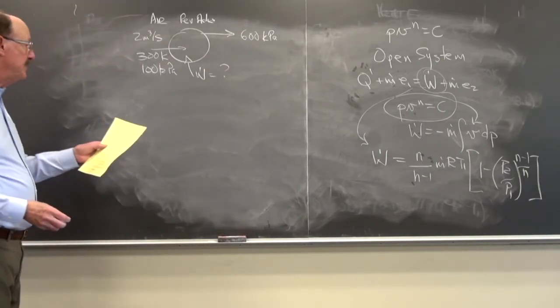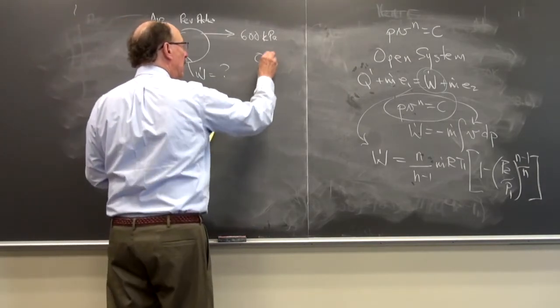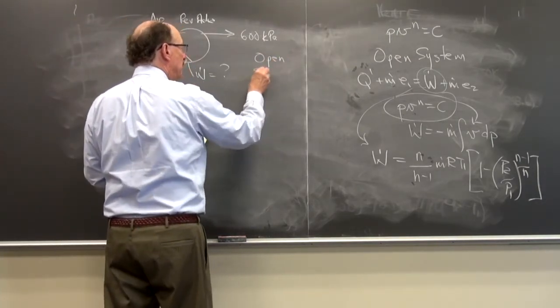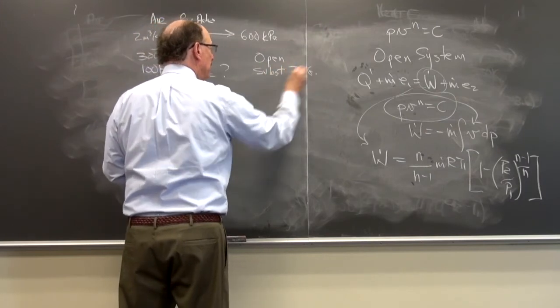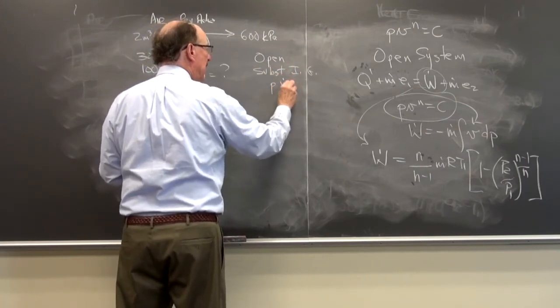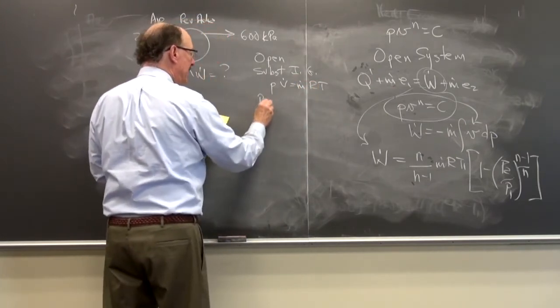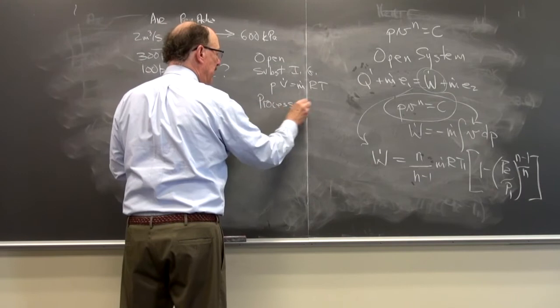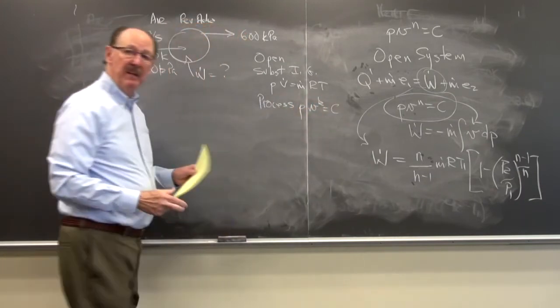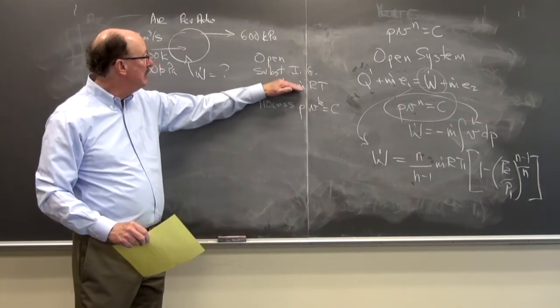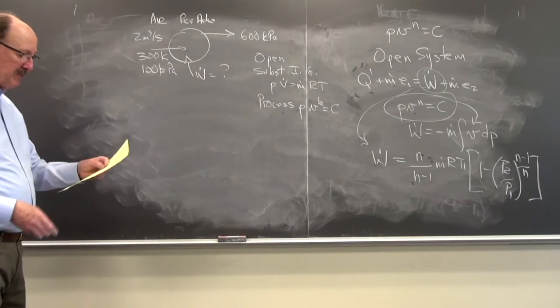So let's find out. I know it's an open system, the substance is air, it's an ideal gas, so I have PV dot is equal to M dot RT, just a different way to write it. The process is P specific volume to the K is equal to a constant, so we have a reversible adiabatic process, ideal gas, open system. So we know how to go about this.